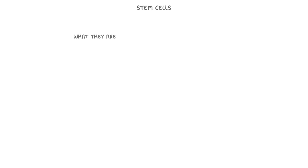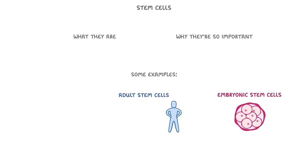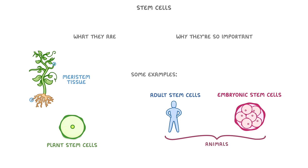In this video we're looking at stem cells. We're going to explain what they are and why they're so important, and then take a closer look at some examples: namely embryonic stem cells and adult stem cells, which are found in animals, and then plant stem cells, which are found in meristem tissue in plants.